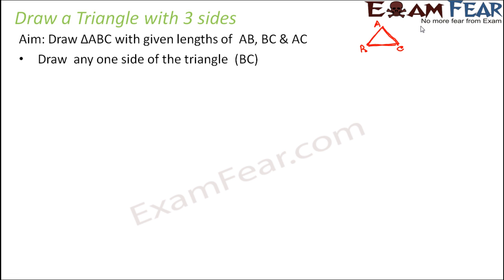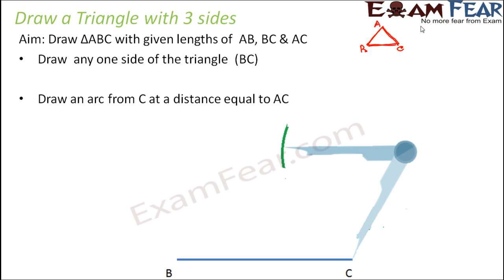First of all we draw any one side of the triangle. In this case let us draw BC, which is like the side at the base. You can draw any side you feel like. This is BC which you have drawn as per the length given. Let us say BC is 5 cm. You measure 5 cm with the ruler and you draw this line BC.